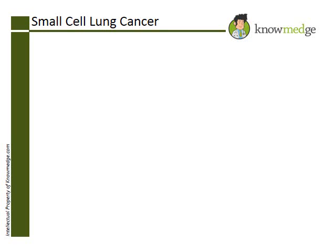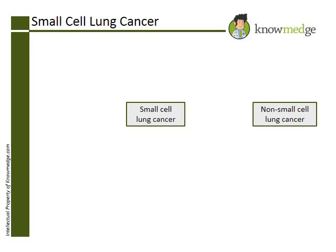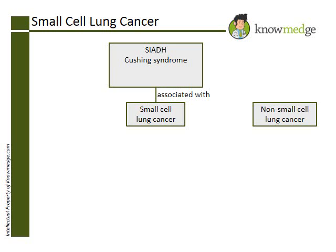Lung cancer is categorized as small cell lung cancer and non-small cell lung cancer. The clues to identifying the patient's lung cancer are the accompanying paraneoplastic syndromes. SIADH, Cushing syndrome from ectopic production of ACTH, carcinoid syndrome, and Eaton-Lambert syndrome are most commonly associated with small cell lung cancer.